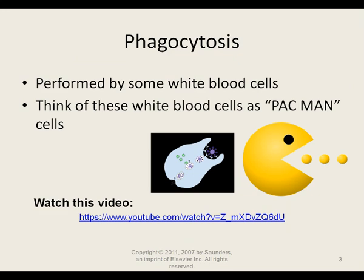One way that white blood cells protect the body from pathogens is through a process called phagocytosis. You don't have to know all the details of phagocytosis — just that it is performed by some white blood cells. You can think of them as Pac-Man cells, going around eating pathogens. The white blood cell engulfs the pathogen through endocytosis, takes it into the cell, and slowly digests it. Sometimes they display proteins from the pathogen on the cell surface.